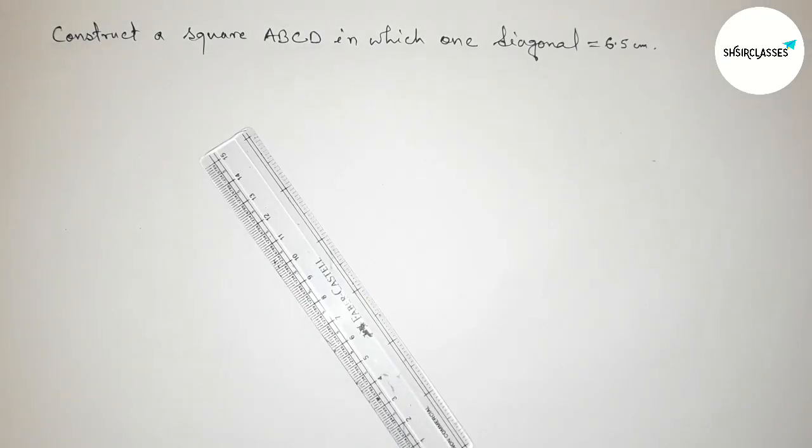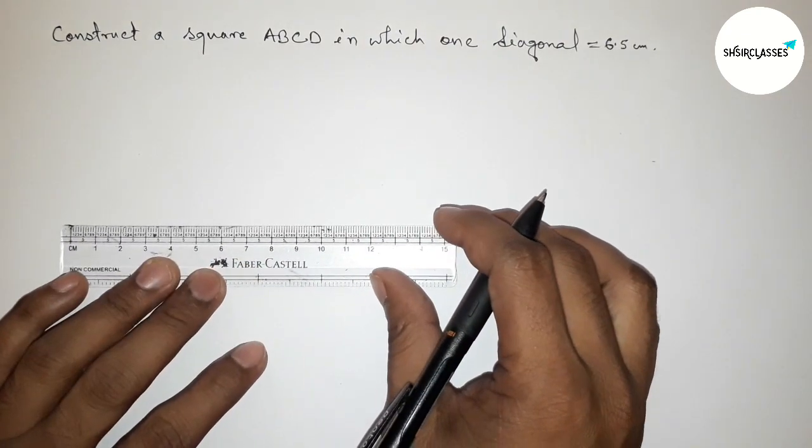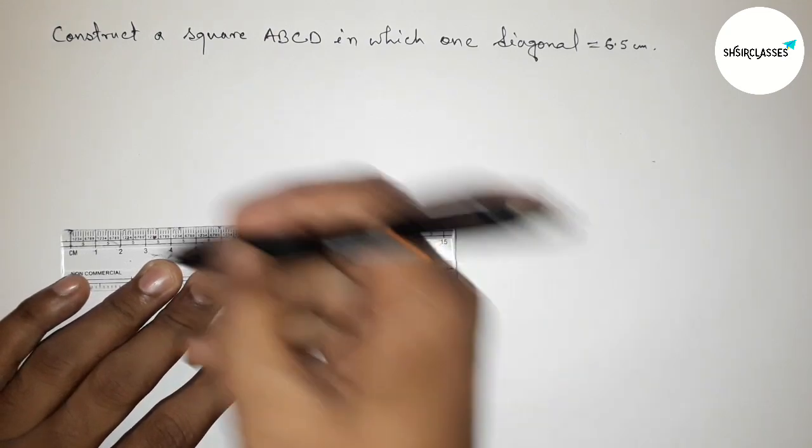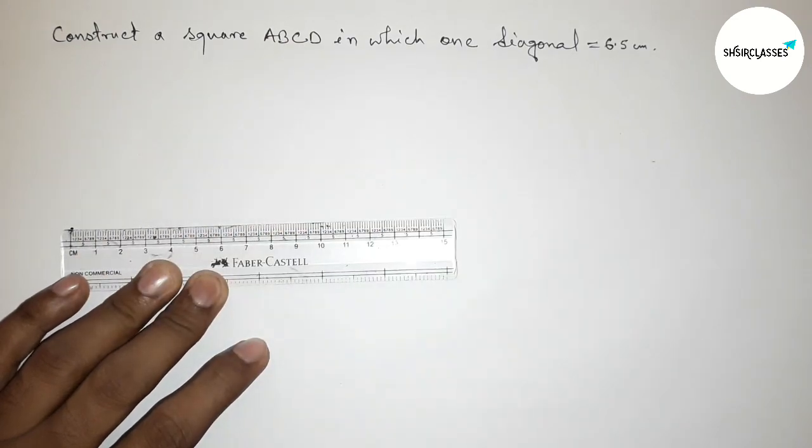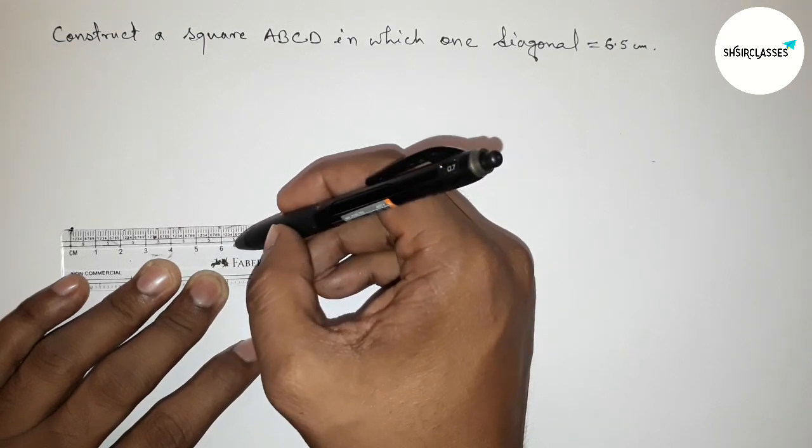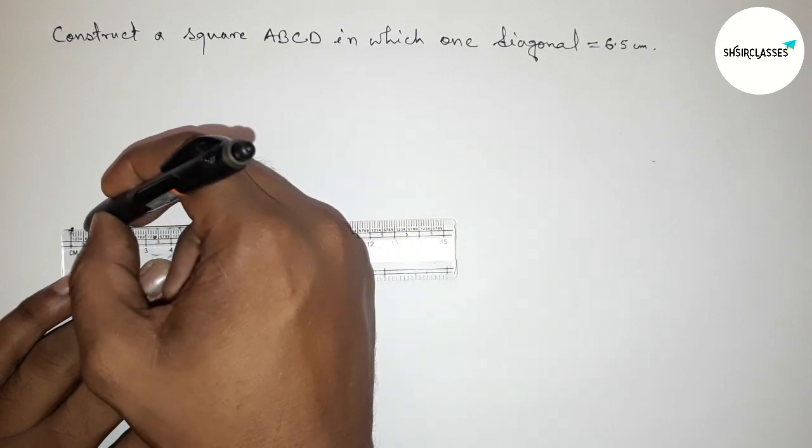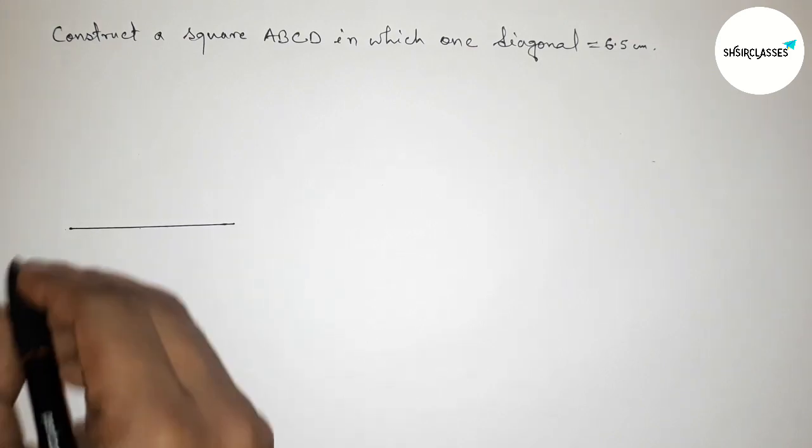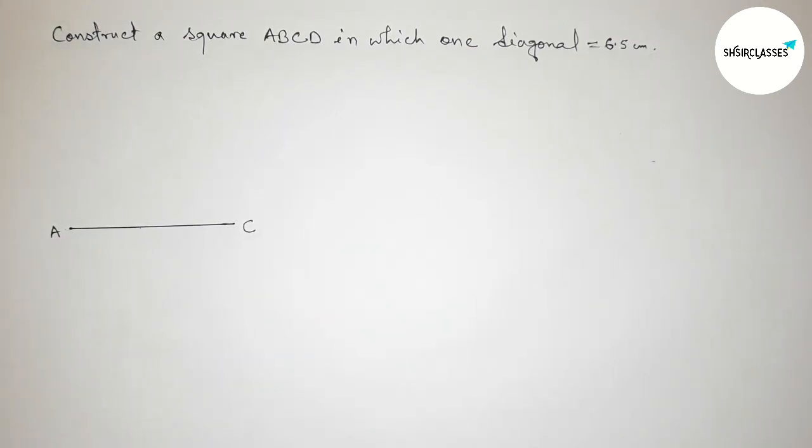First of all with the help of scale, we have to draw here the diagonal 6.5 centimeter. This is starting zero, now counting: one, two, three, four, five, six, and this is six point five centimeter line segment.